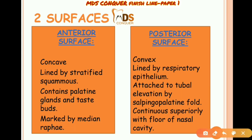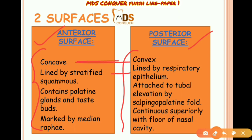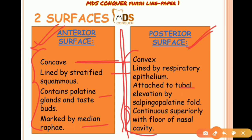The soft palate has two surfaces: anterior and posterior. The anterior surface is convex with stratified squamous epithelium, contains palatine glands, and is continuous superiorly with the floor of the nasal cavity. The posterior surface is concave with respiratory epithelium, attached to the tubal elevation, and marked by the median raphé.